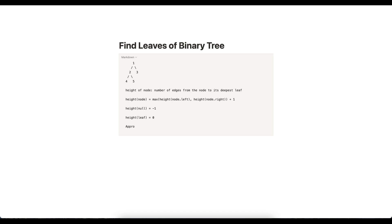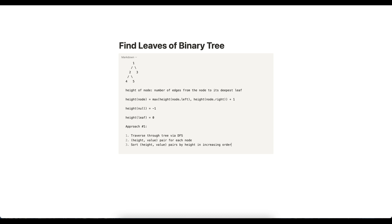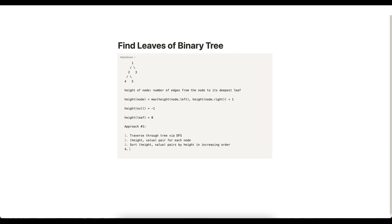Now let's take a first approach at this problem. We can traverse through the tree via depth-first search using post-order traversal. Then we come up with a height-value pair for each node. At this point all we have to do is sort the height-value pairs by height in increasing order, then collect all the pairs' values where their heights are the same, and that gives us the answer.